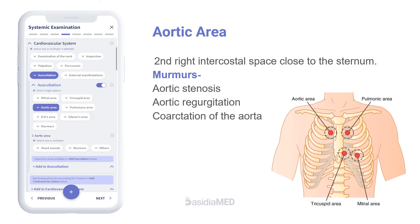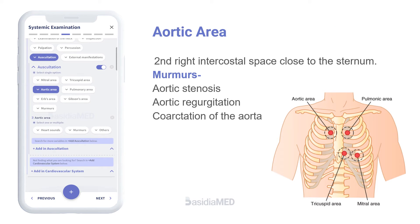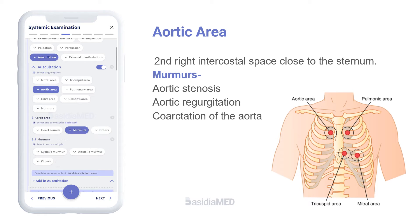The aortic area corresponds to the second right intercostal space, close to the sternum. Murmurs here are suggestive of aortic stenosis, aortic regurgitation, and coarctation of the aorta.